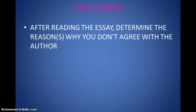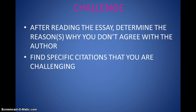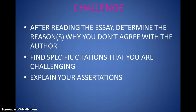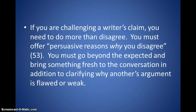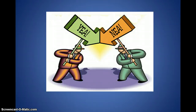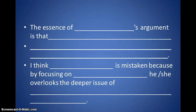So the second piece here is the challenging. After reading the essay, determine the reasons why you don't agree with the author — this is where you oppose, refute, or argue with the author. Find specific citations that you are challenging — find the specific reasons in the text that you are challenging. And explain your assertions. Consider providing a better argument, maybe a possible solution. So if you are challenging a writer's claim, you need to do more than disagree. You must offer persuasive reasons why you disagree and go beyond the expected to bring something fresh to the conversation — tell me why you would disagree and how you would make it better. Tell me how the author is flawed or weak in their argument. So this is where you are opposing, refuting, or arguing. The essence of the author's argument is that blank — I think the author is mistaken because by focusing on blank, he or she overlooks the deeper issue of. There is a writing template to start your assertion statement.